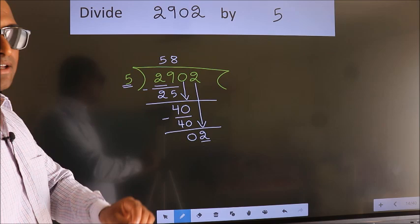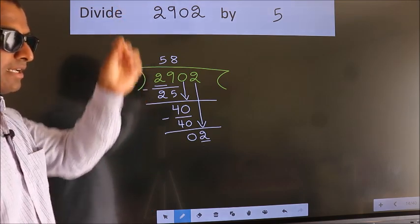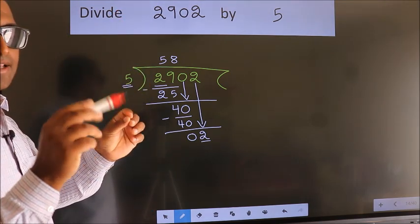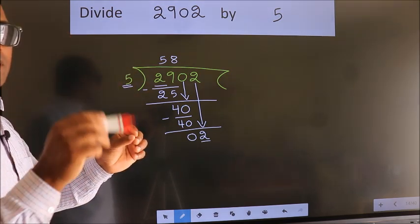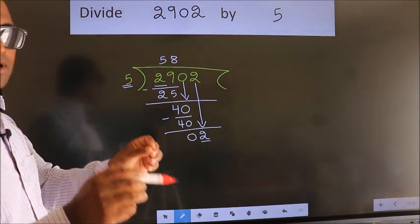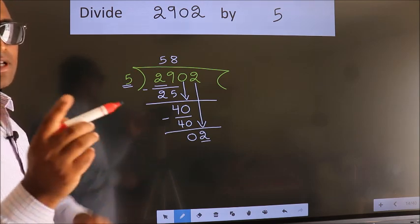I repeat: bringing down the number and also putting the decimal point and taking 0—both in the same step—you should not do this.